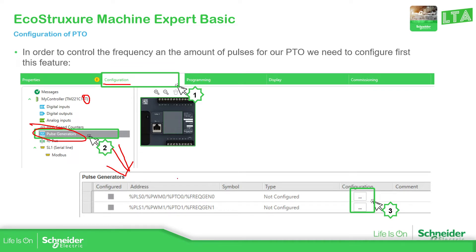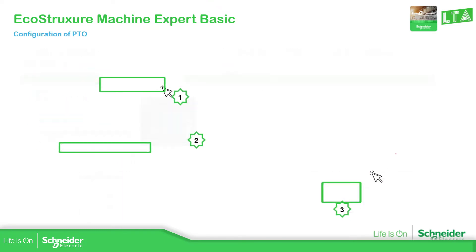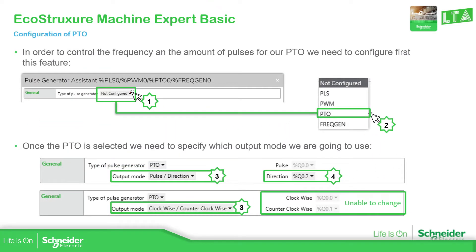Once we have the pulse generator option, we click on the square to access the configuration. When we select PTO output, it gives us the two modes. If you use clockwise/counterclockwise, you can see it uses both fast outputs on the controller. If you use pulse direction, it uses one fast output for the pulse, and the direction can be assigned to any other normal output.